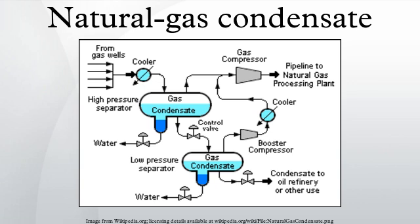Raw natural gas may come from any one of three types of gas wells. The first is crude oil wells — raw natural gas that comes from crude oil wells is called associated gas. This gas can exist separate from the crude oil in the underground formation, or dissolved in the crude oil. Condensate produced from oil wells is often referred to as lease condensate.